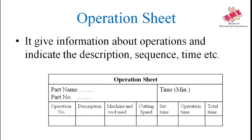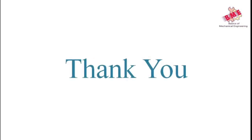The operation sheet shows everything about the operations and indicates the operation descriptions, sequence, type of machinery used, tools used, cutting speed, feed, setup time, operating time, and totals. From this video you have seen what is process planning, also known as process engineering. In the next video we will see the critical path method. Thank you — if you like this video, please subscribe to the YouTube channel and press the bell icon for more videos.